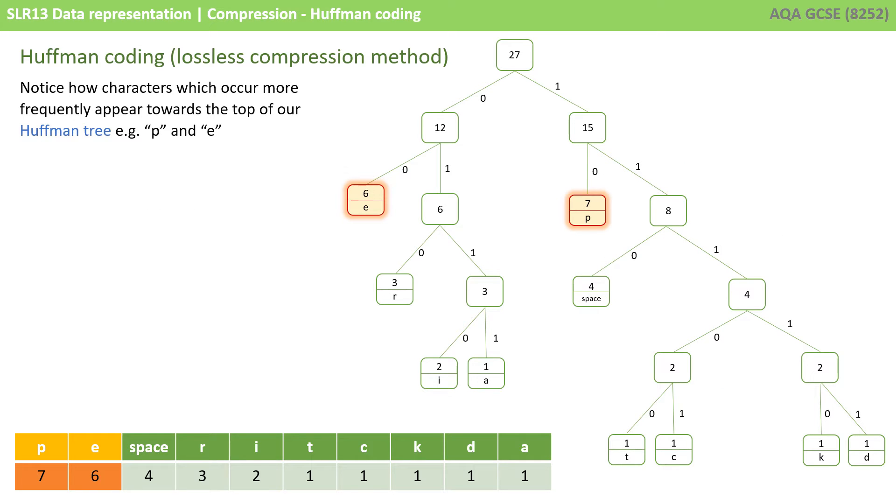Here is the Huffman coding tree for the phrase we looked at earlier. You don't need to create these in the exam, but notice how characters which occur more frequently are appearing towards the top of a Huffman tree. P and E, which had seven and six occurrences each, are quite close to the top of a Huffman tree. Whereas characters which occur less frequently, like the letter T and C, which appear only once, appear towards the bottom of a Huffman tree.